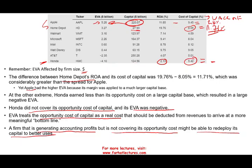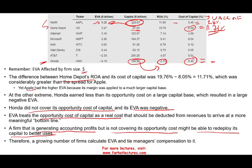That's why many firms use EVA rather than accounting numbers to compensate managers and give bonuses — they want to know if managers are covering the opportunity cost for investors, and based on that, managers will be rewarded.